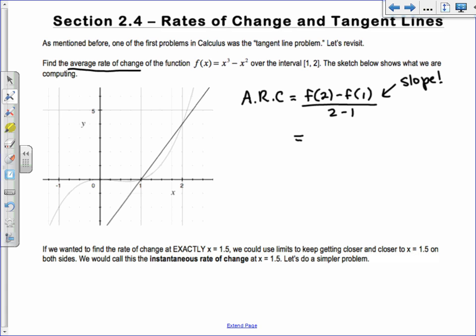So f(2), you plug in 2, we get 8 - 4, so it's 4. F(1) is 0. Do you guys see that? You could also look at your picture. Over 2 - 1, so it's 4 over 1, which is 4. The average rate of change is 4. What you're finding is basically the slope between two points on a particular curve. Here's the curve, so you just find the slope between the two points.